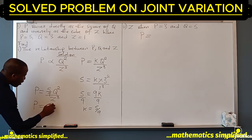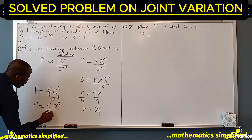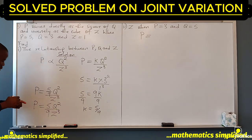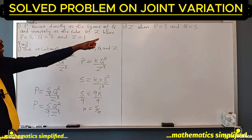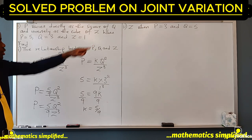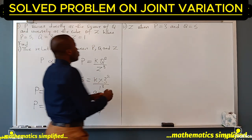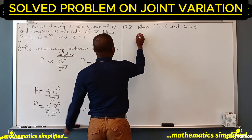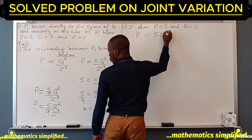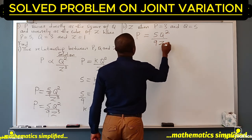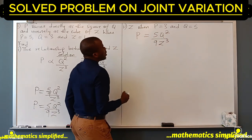We have p is 5 over 9 q squared over z cubed, or we can write it as p is 5 q squared over 9 z cubed. Now to look for what z is when p is 3 and q is 5.